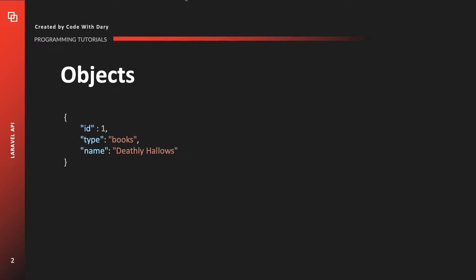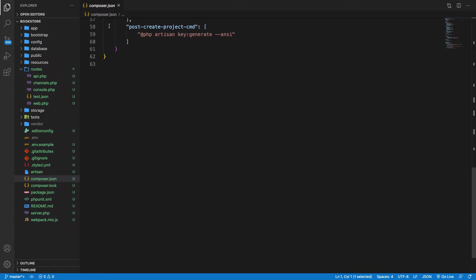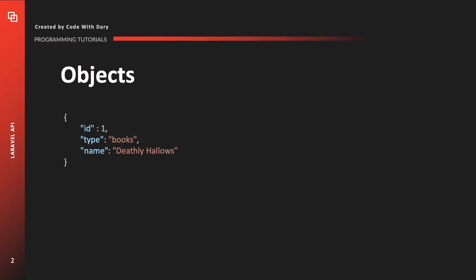Let me show that to you. If I go to Visual Studio Code, you can see that I have my composer.json file open, and right here you can see that it starts with an opening curly brace and at the bottom it has a closing one. The lines you place inside your curly braces need to have a comma to show a separation. As you can see, we have our ID which is equal to one, comma, type which is equal to books, and name, which is the last one, does not have a comma.